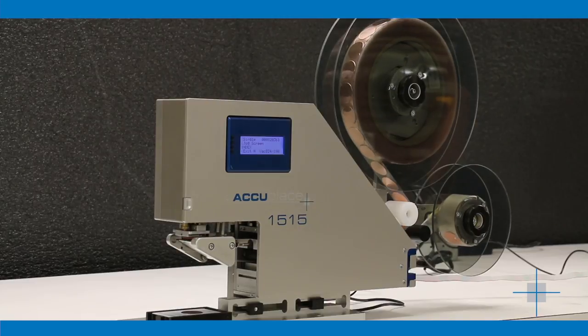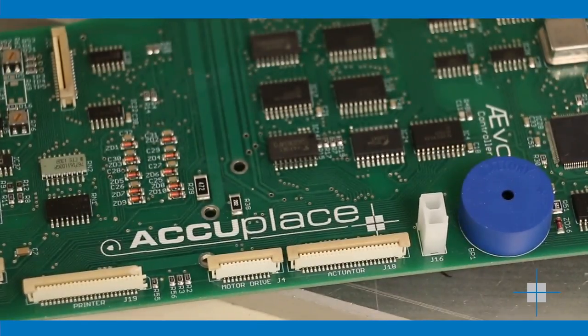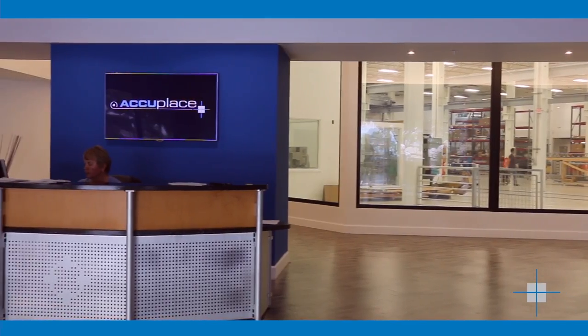For over two decades, AccuPlace machines have been the world's most accurate adhesive component placement machines, placing labels within two thousandths of an inch.